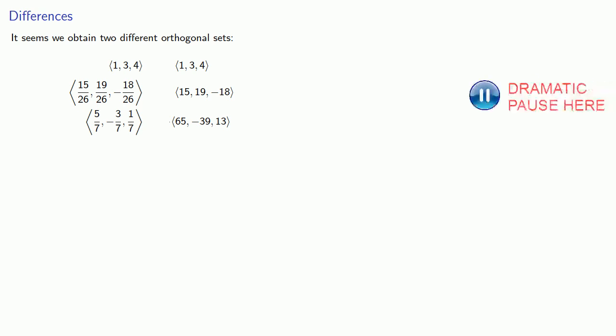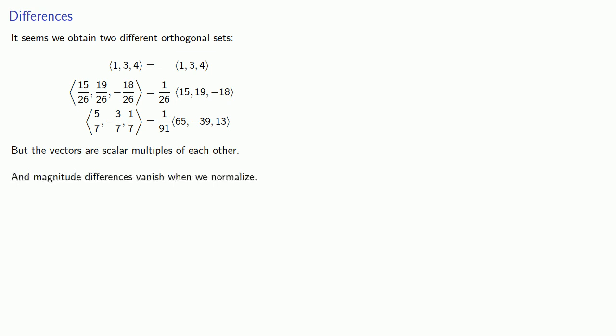Now it might seem that we obtain two different orthogonal sets. These vectors, which we obtained using Gram-Schmidt in its classical form, and these vectors, which we obtained by using the concept that we want our vectors to be orthogonal, as well as the idea that every problem in linear algebra begins with a system of linear equations. So which set is correct? Well, it turns out the vectors are scalar multiples of each other. And if our next step is to normalize these vectors, these magnitude differences vanish when we normalize. So while there may be a difference between the vectors, this difference makes no difference.